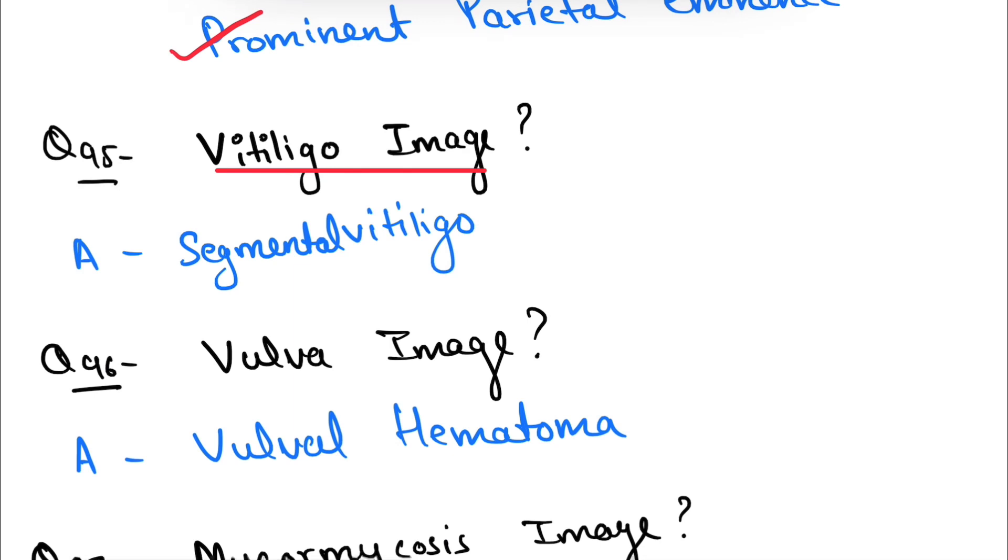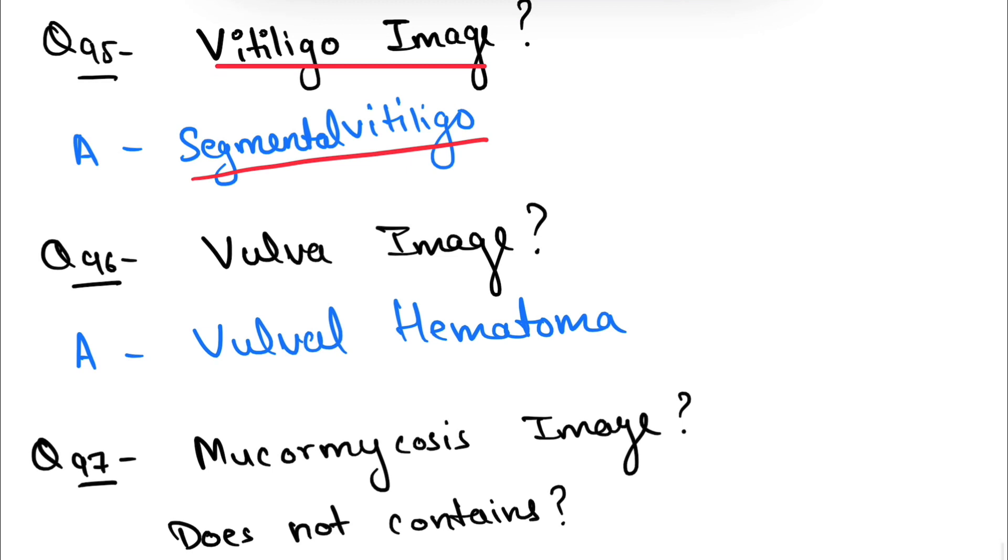about the type of vitiligo. This is segmental vitiligo. Question number 96: vulva image was given with a swelling.